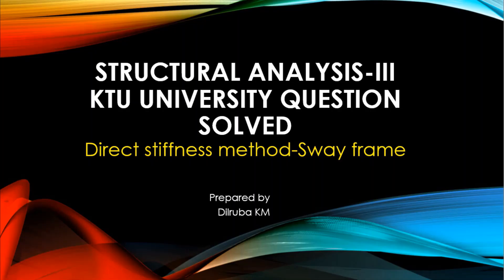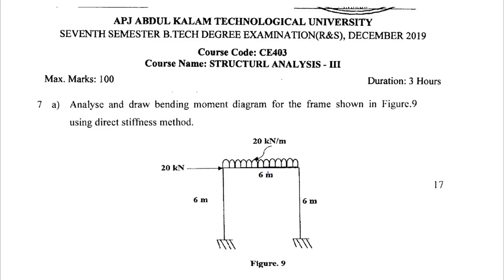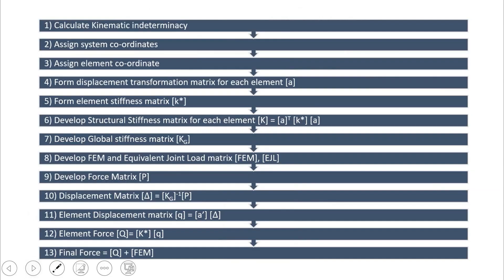Hello everyone. Today in this video we are going to see a previous year university question from Module 5, that is the Direct Stiffness Method. This question is from December 2019, and it asks us to analyze and draw the bending moment diagram for the frame shown in the figure using the Direct Stiffness Method. There are 13 steps in order to find out the final force acting on the structure.